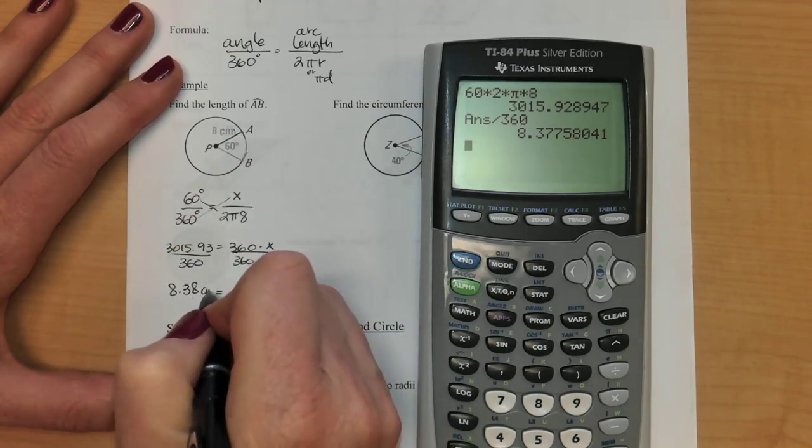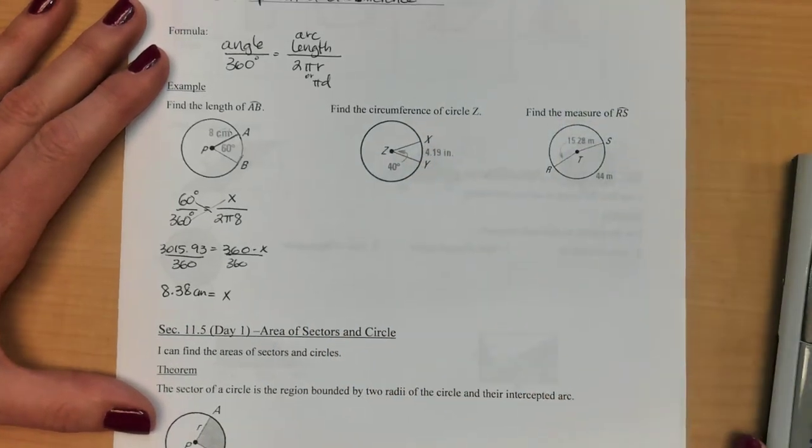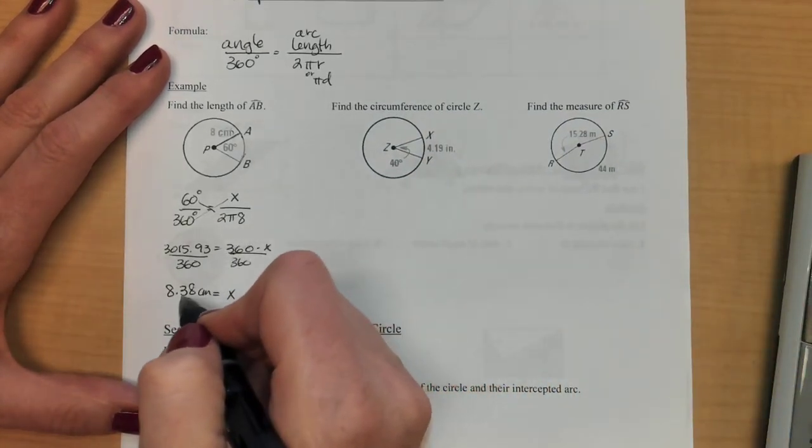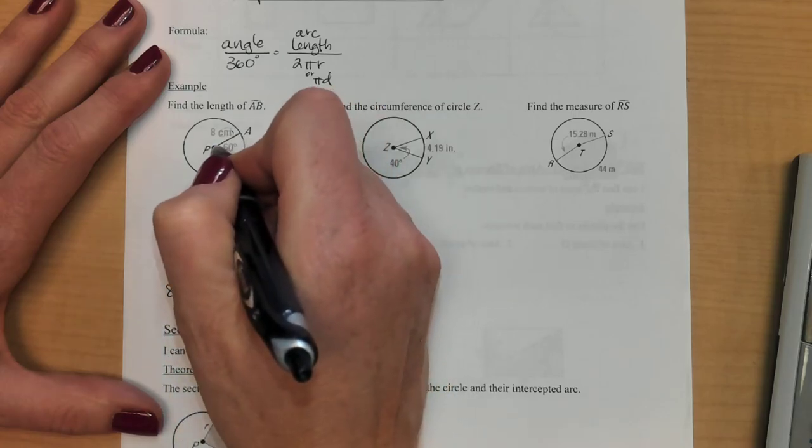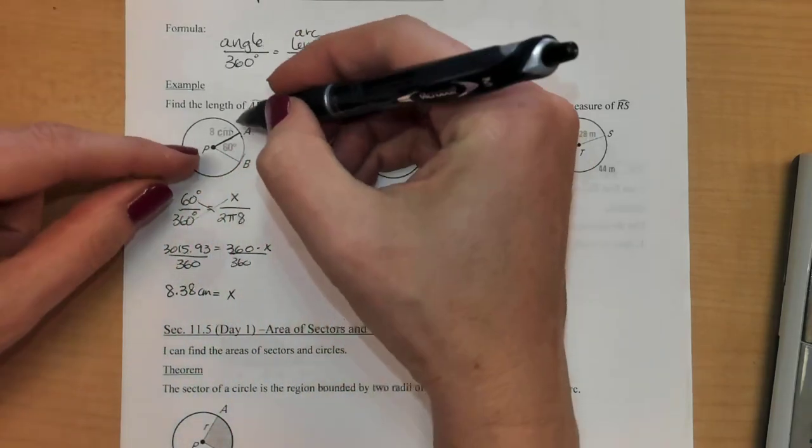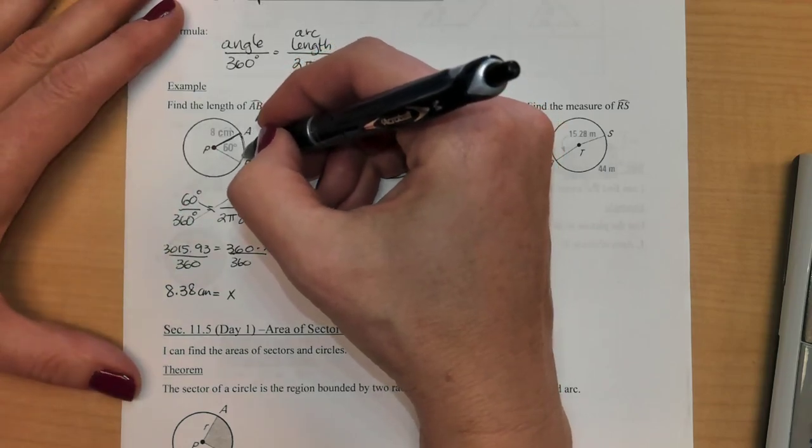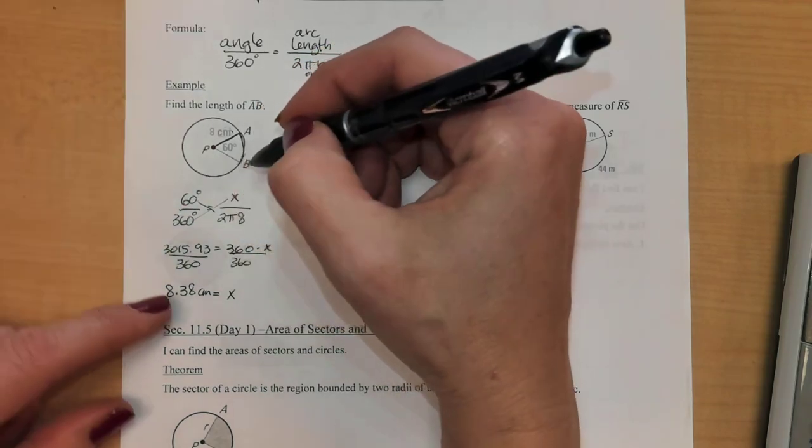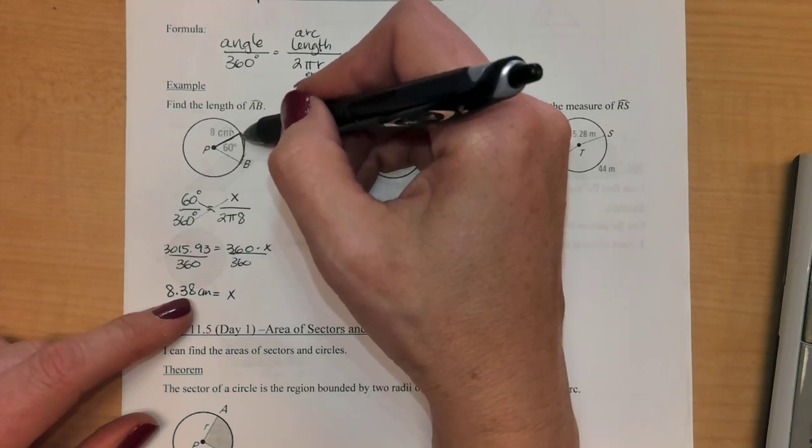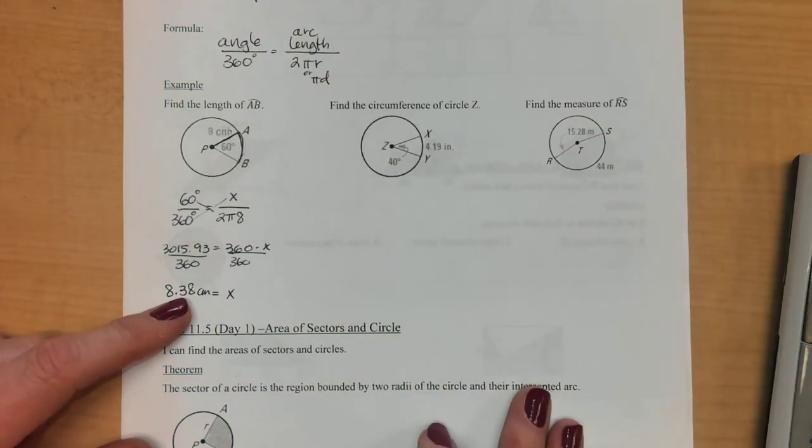And this one turns out to be about 8.38, and we were in centimeters so we will be centimeters. Then you just want to look at your picture real quick and make sure that that answer makes sense. So if this is 8 centimeters, imagine taking that like a piece of string that length right there. And if I laid it out here, does that look like that could be about 8.38? And I'd say yeah that's pretty dang close to the 8 that it was originally.